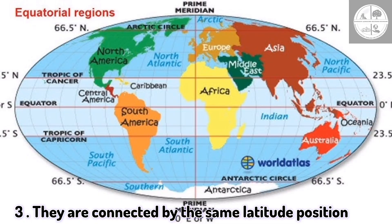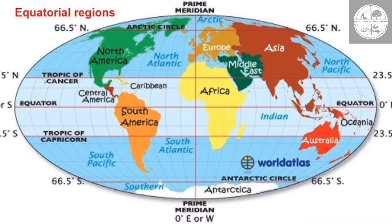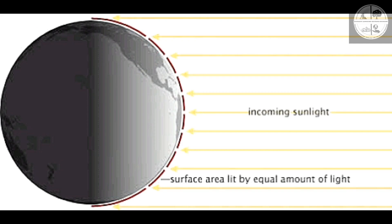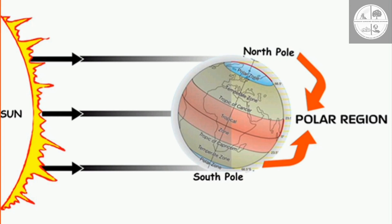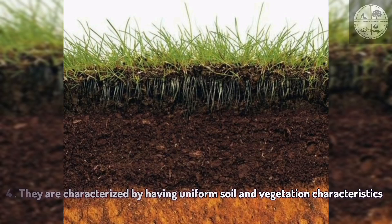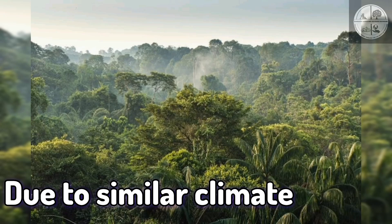Number three: natural regions are connected by the same latitude positions. Regions at the same latitude often receive similar solar energy, leading to comparable climates and ecosystems along horizontal belts of the earth. Number four: they are characterized by having uniform soil and vegetation characteristics.